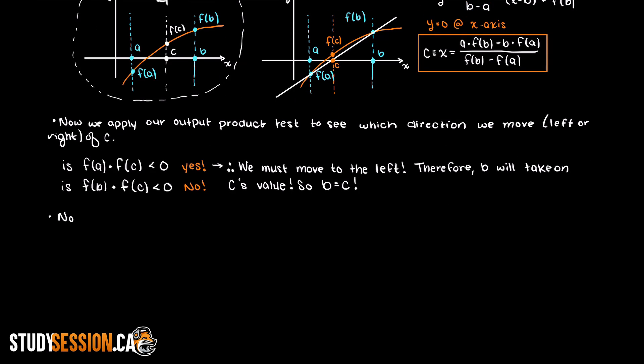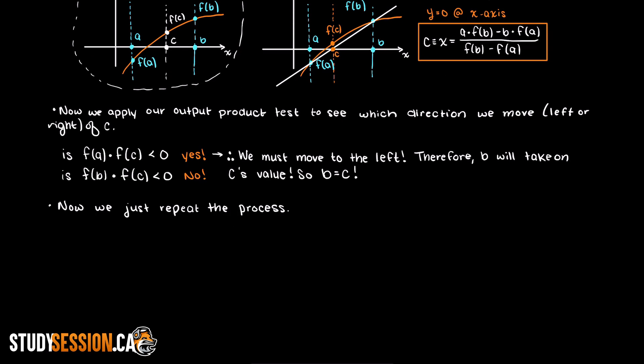And that is really it. That is all there is to the false position method. We just continue to cut our input range through drawing a line between our f of a and f of b. Determine which side's output is less than zero and we repeat this process until we reach an acceptable level of error.